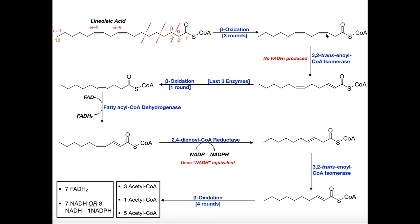If we do three rounds of beta-oxidation, we can already expect to get out three NADHs, three FADH2s, and three acetyl-CoAs, and I've already tabulated those three right here.